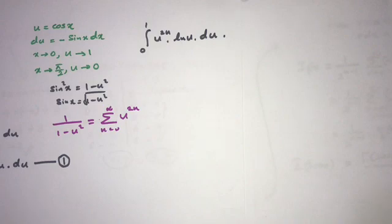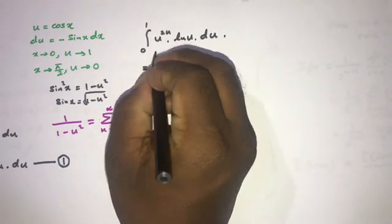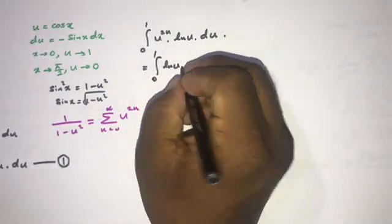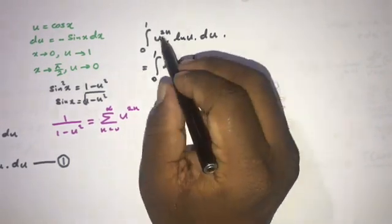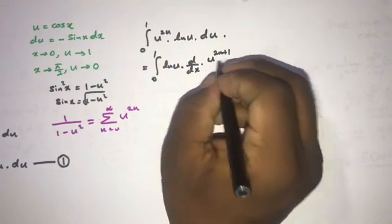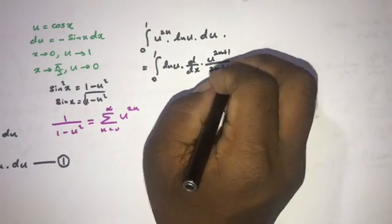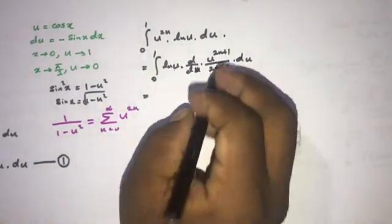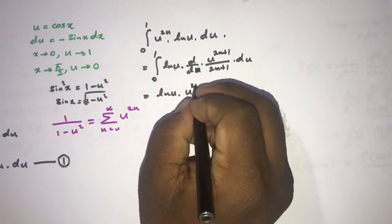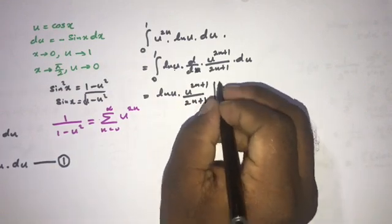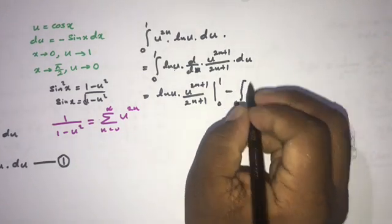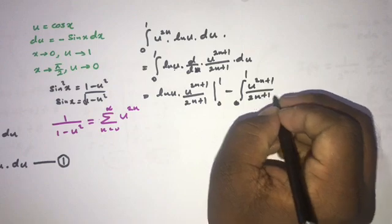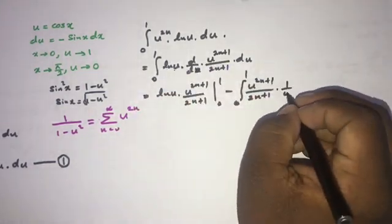We use integration by parts. Taking the first function as ln(u) and the second as u^(2n), the integral from 0 to 1 of ln(u) · u^(2n) du equals: ln(u) · u^(2n+1)/(2n+1) evaluated from 0 to 1, minus the integral from 0 to 1 of u^(2n+1)/(2n+1) times 1/u du.